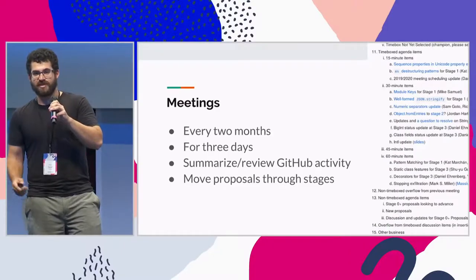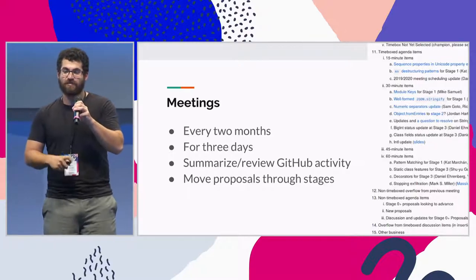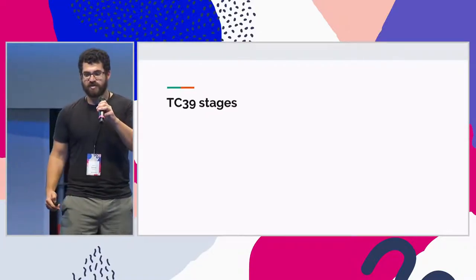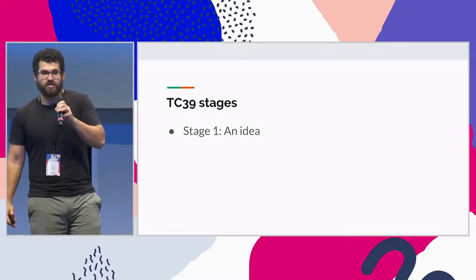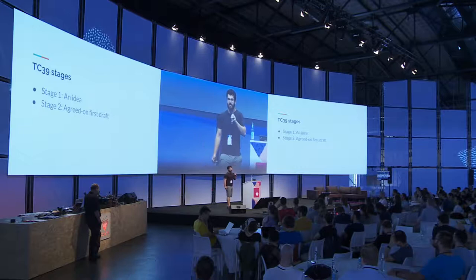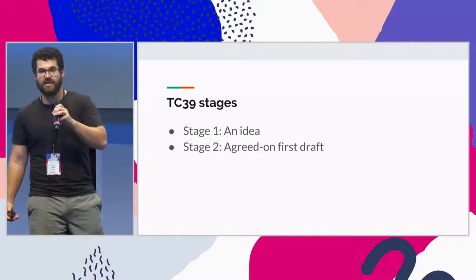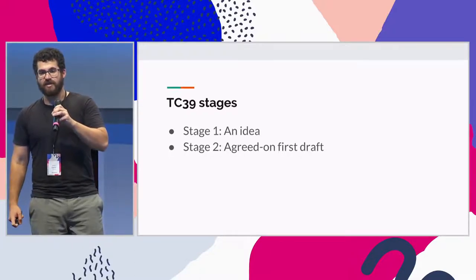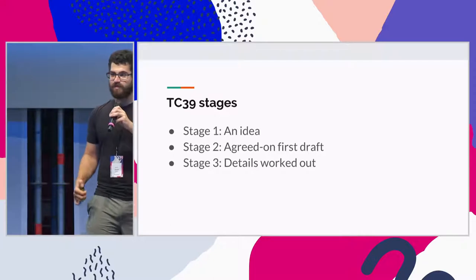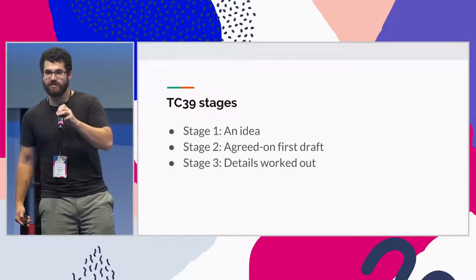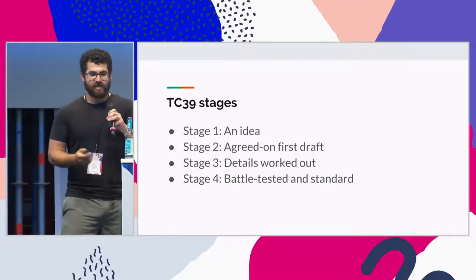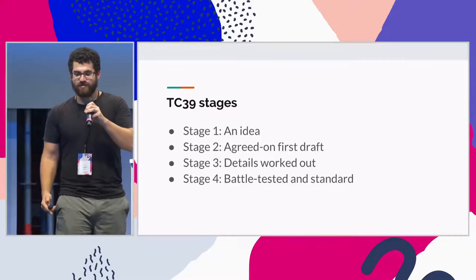Proposals move through stages. Stage 1 is just a general idea — we're discussing a problem space within the committee. Stage 2 means we have an agreed-on first draft and TC39 has decided we're going to do something here. By stage 3, all the details are worked out, we have a complete first specification, and it's ready to go off to implementers. By stage 4, we have multiple implementations and lots of feedback from real usage, and we're ready to make it part of the actual JavaScript standard.